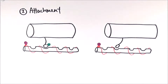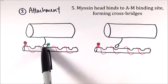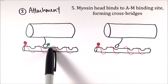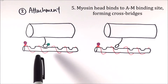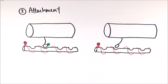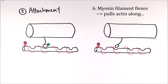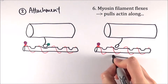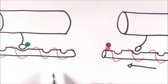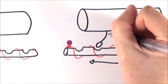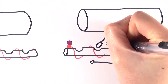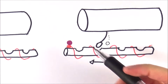Here we come to the second stage, which is attachment. Because the binding site is revealed, the myosin head can then naturally bind to it, forming cross bridges. What happens next is the myosin filament will flex itself and pull the actin filament along in that direction. So if you imagine that originally it is at this particular position, it will then move it that way, pulling the filament along.